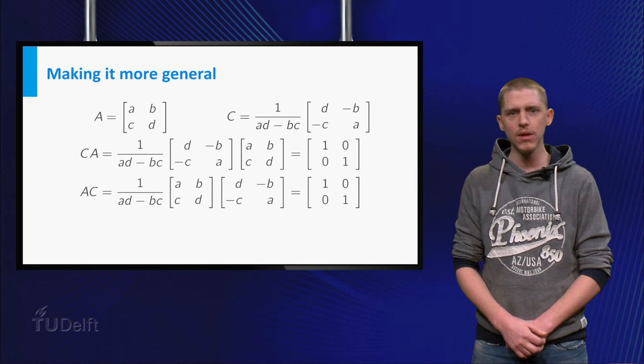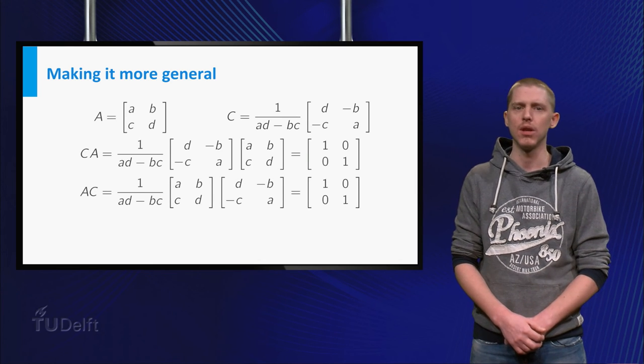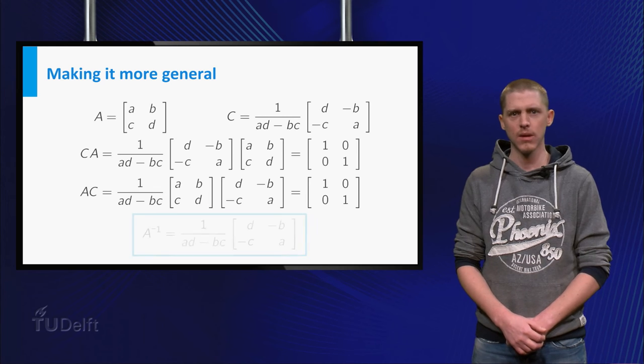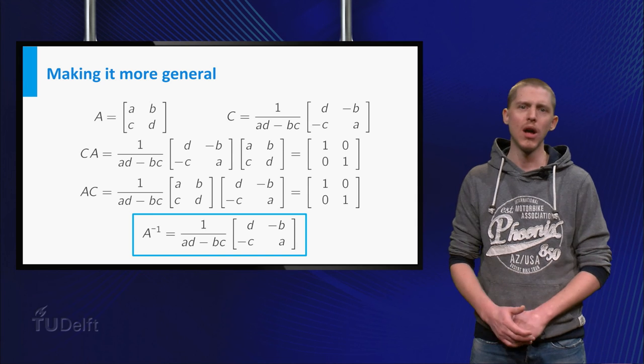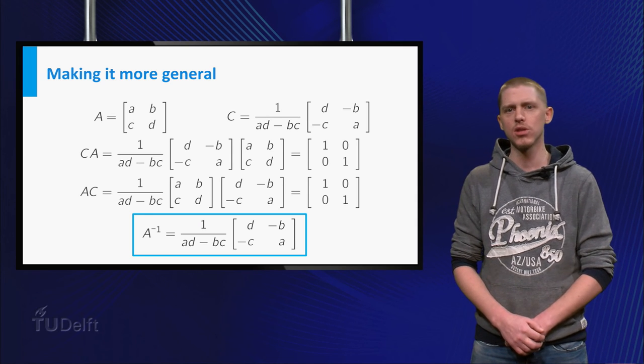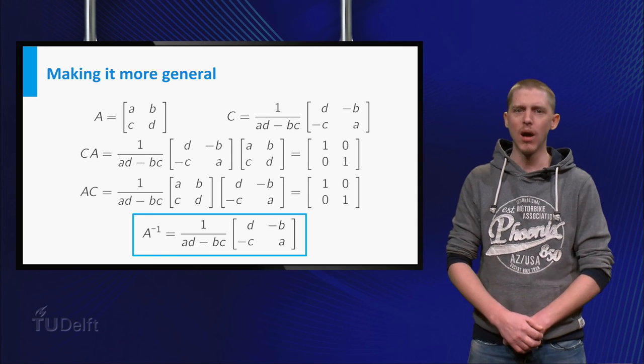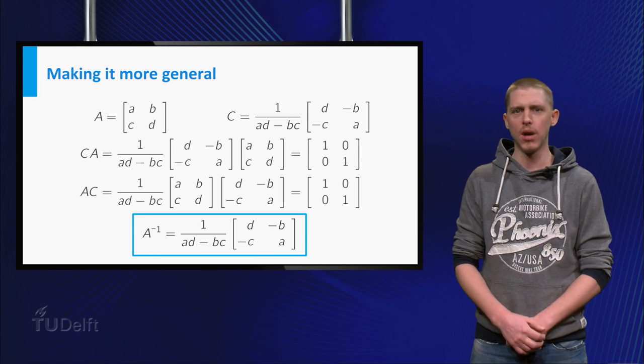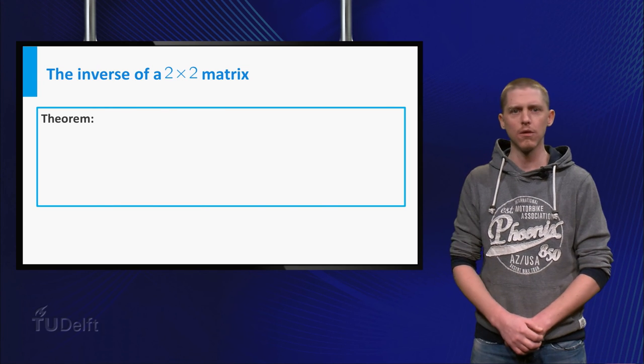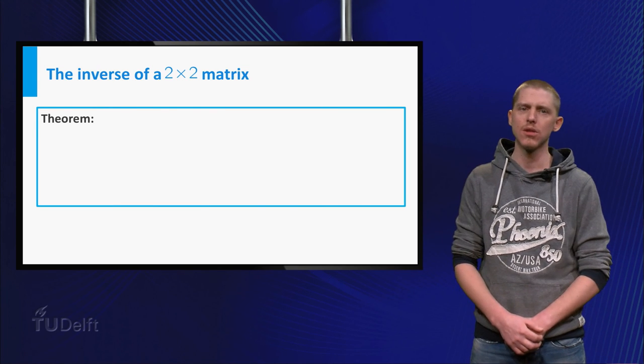In this case you even get the identity matrix if you calculate A times C. Now we have found the inverse of A and so A is invertible. You should, however, remember that we made the assumption that ad minus bc is unequal to 0 because you divide by this number.